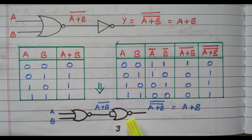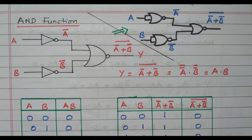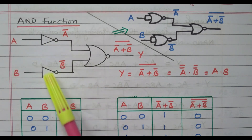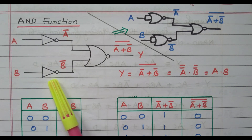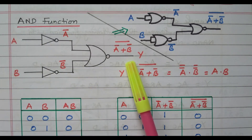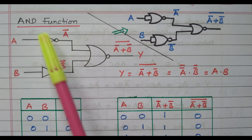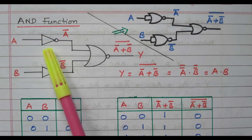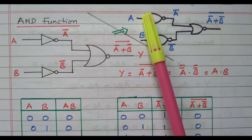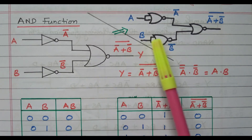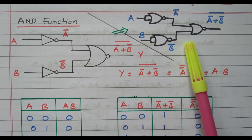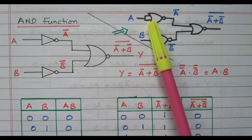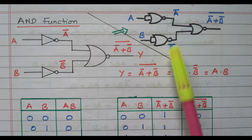Now we will go to the AND operation. The AND operation is performed using NOR gate by connecting NOR gates at the input side. Earlier we connected the NOR gate at the output side to get the OR function. In order to get the AND function, the NOR gate is connected at the input side. Each NOR gate used as inverter has both its inputs short-circuited — connected to a common input.